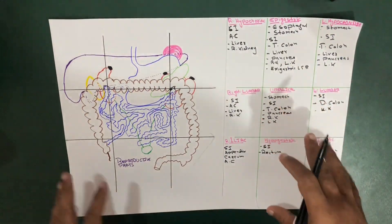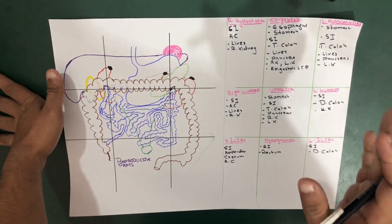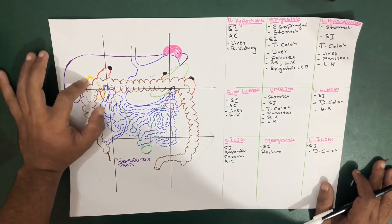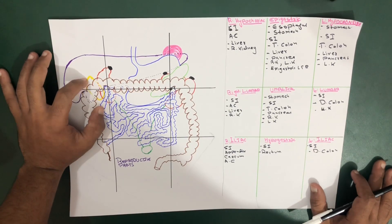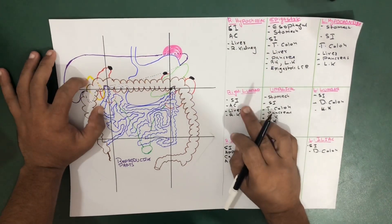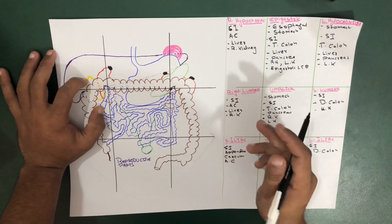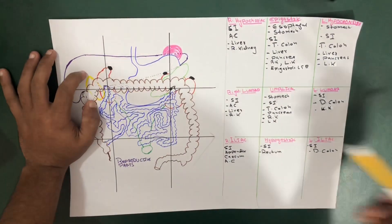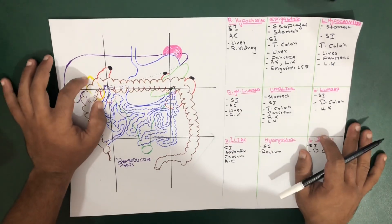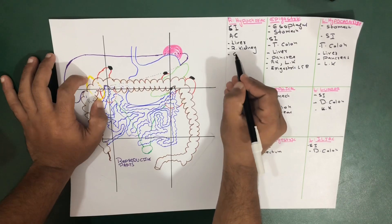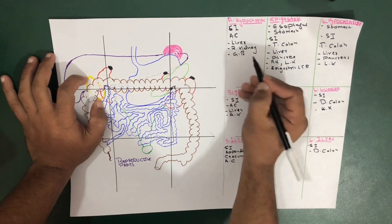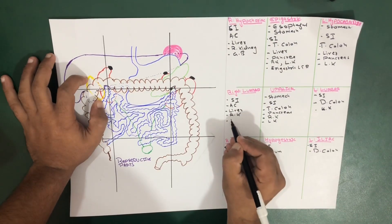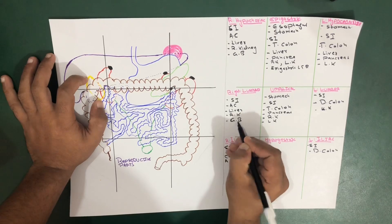Now we'll move towards the gallbladder. The gallbladder occupies only two regions: the right hypochondriac region and the right lumbar region, nothing else. In the diagram I've used yellow color to show the gallbladder. So gallbladder is present in the right hypochondriac region and the right lumbar region.